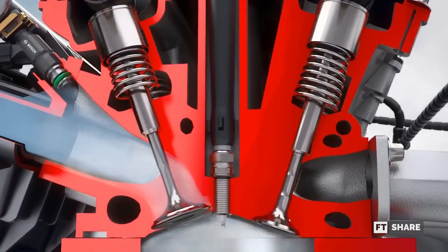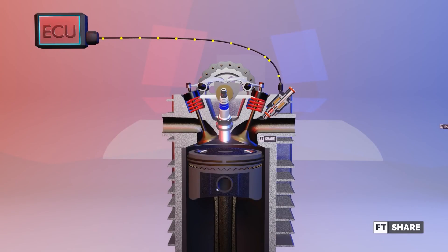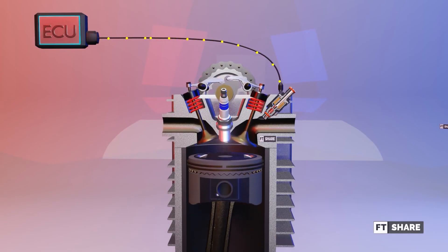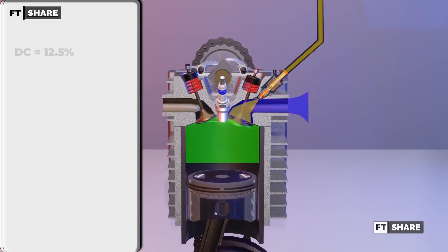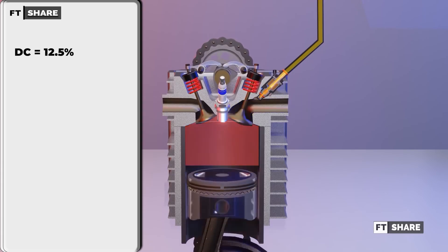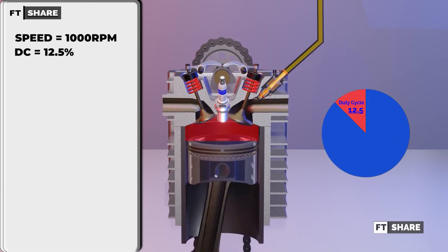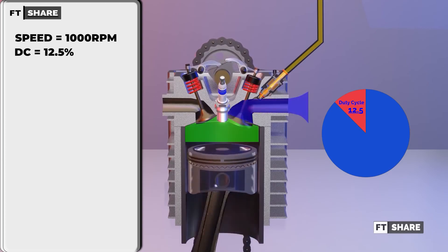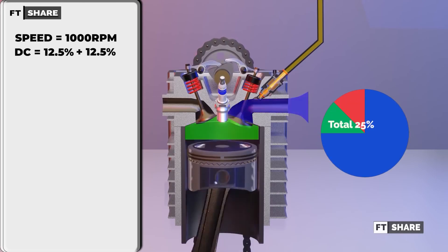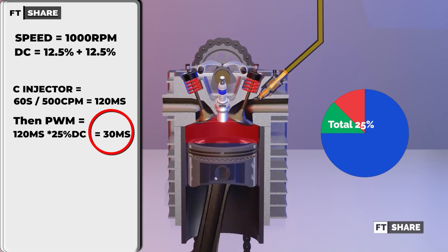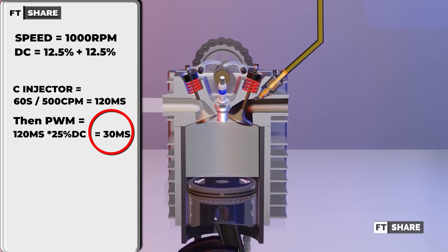However, this is not the end of the story. The pulse width or duty cycle can vary in different engine conditions. The ECU will adjust the calculation based on input data from all the sensors we previously discussed. To illustrate, if the duty cycle in standard engine conditions is 12.5% and the engine is cold, then the sensor will command an increase in the length of the duty cycle. At 1,000 revolutions per minute in cold engine conditions due to being newly started, the ECU will provide additional fuel by extending the duty cycle by 12.5%. This results in a PWM of 30 millisecond, which means there will be more fuel supplied to the combustion chamber to increase the explosion until the engine reaches the ideal temperature.